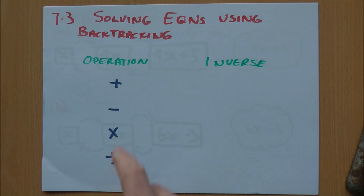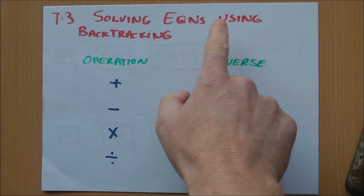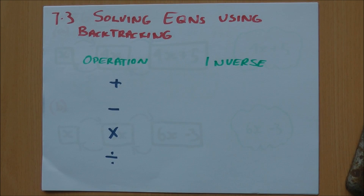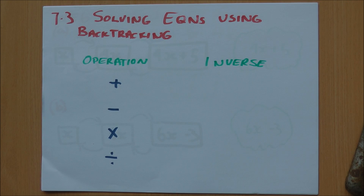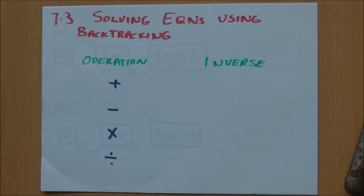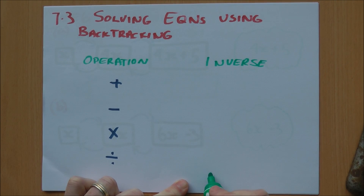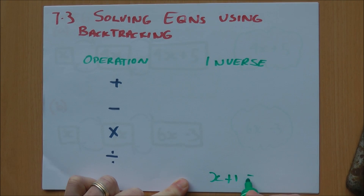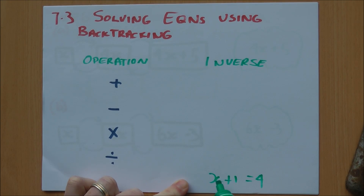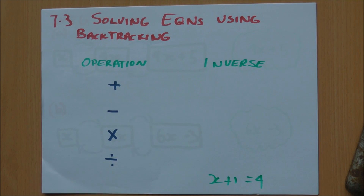7.3 Solving equations using backtracking. Sometimes when we solve algebraic equations, the solution is quite easy to see. For example, if we had a question such as x plus 1 equals 4, we know that x, we add on 1 and we get 4. So x is 1 less than 4, therefore x is 3. This is a quite simple example.